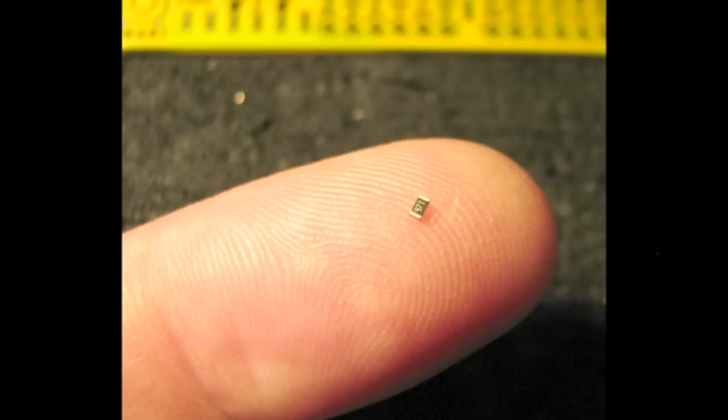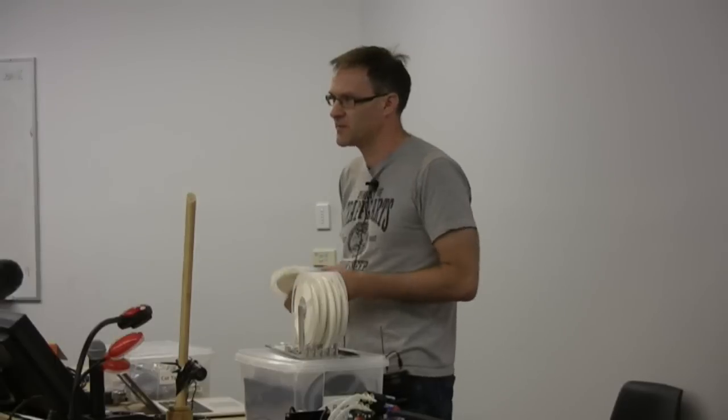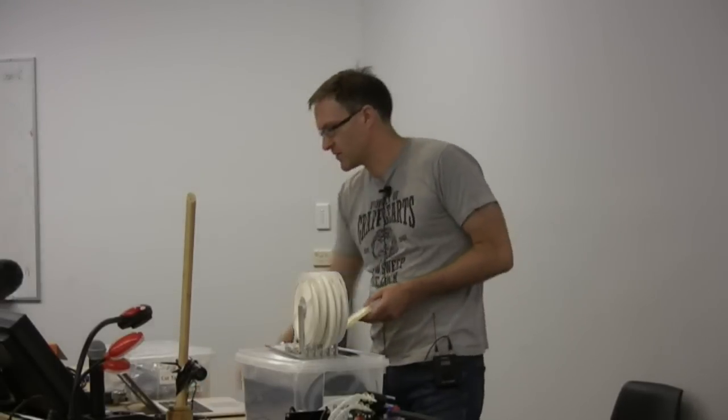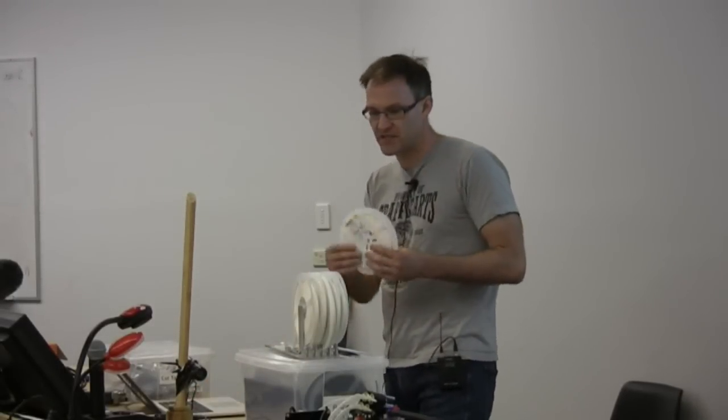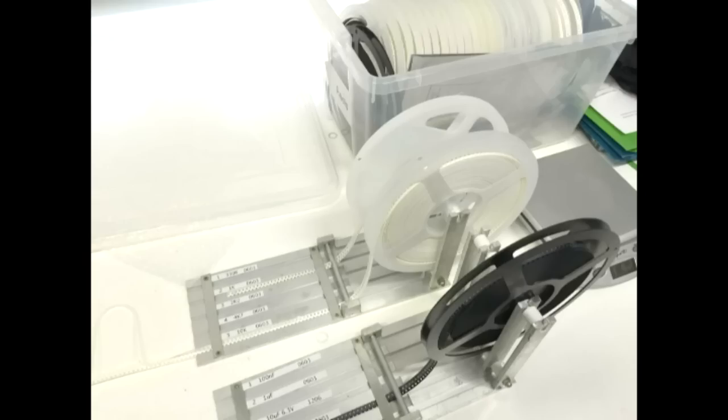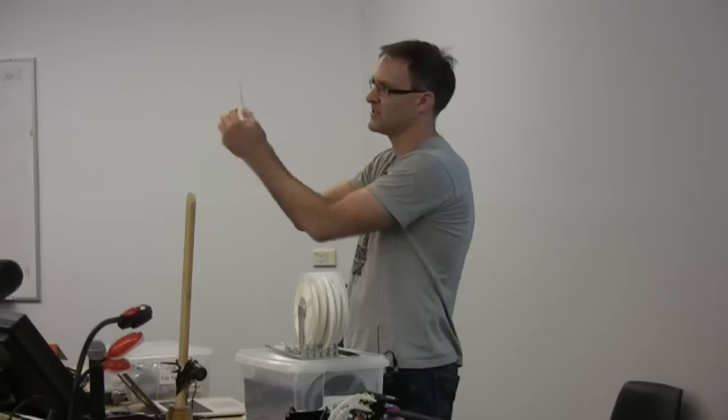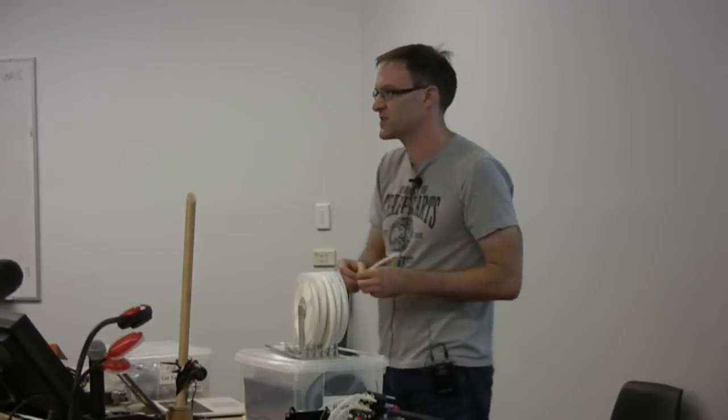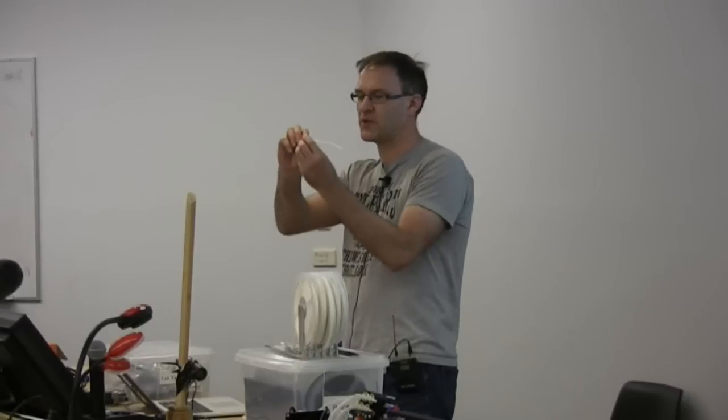And they come typically on reels. These are designed for machine assembly, they're not designed for hand assembly. The parts themselves are on a continuous tape, which has got little holes in it. It's like an old style film projector where the sprocket drags it along and you can get parts out of the tape.